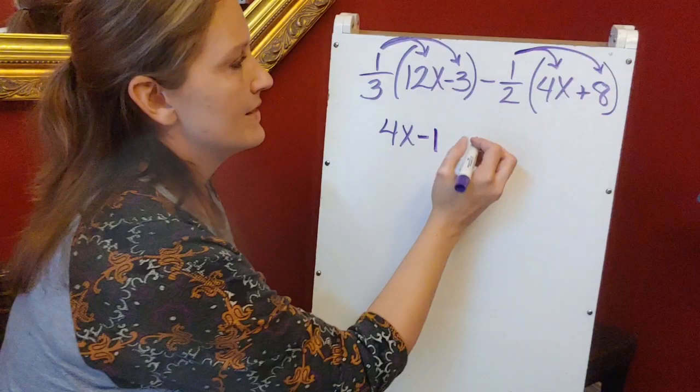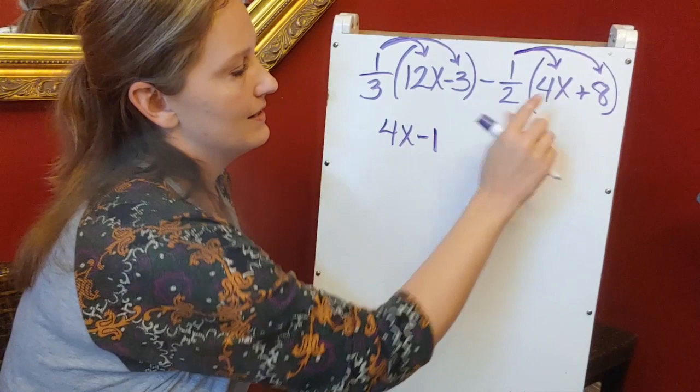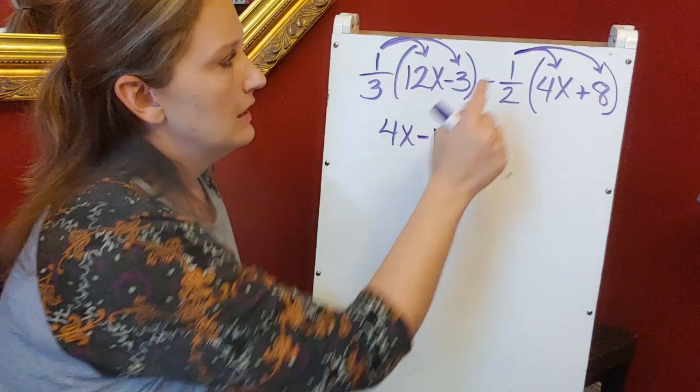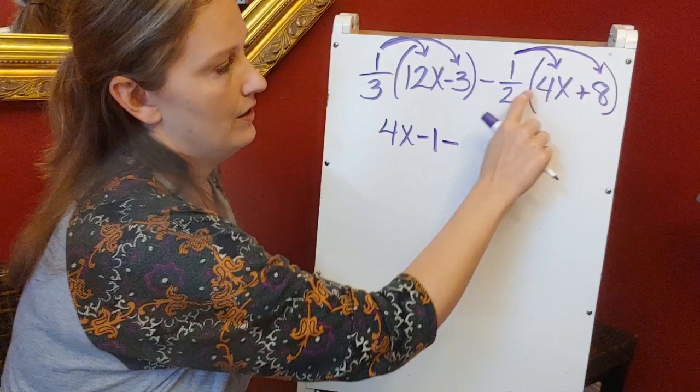Then I'm going to look at my second set of parentheses. This is a negative times a positive. So I know it's going to be a negative answer. I'm going to go ahead and put my minus down there. I'm going to do the same thing. 1 times 4 is 4. 4 divided by 2 is 2. So minus 2x.